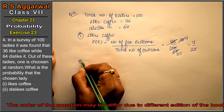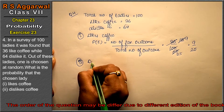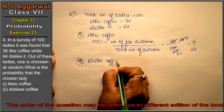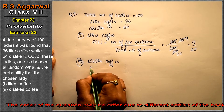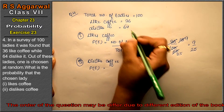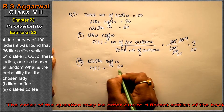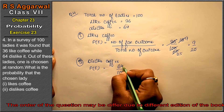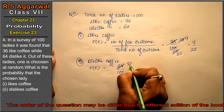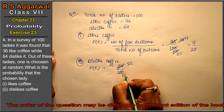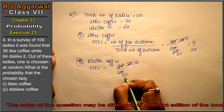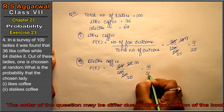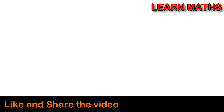For the second part, what is the probability that the chosen lady dislikes coffee? Those who disliked coffee were 64 out of 100. Reducing: 2 thirty-twos are 64, 2 fifties are 100, giving 16 upon 25 as the answer.